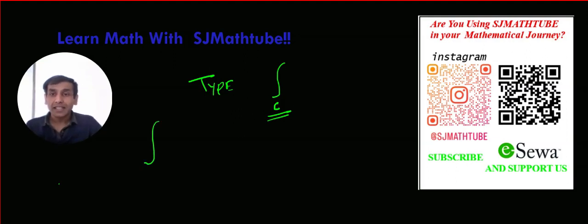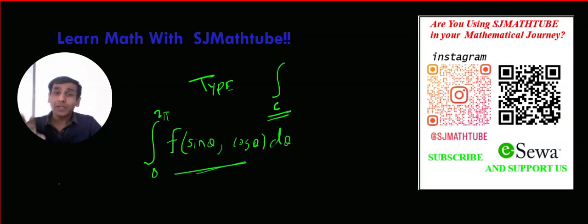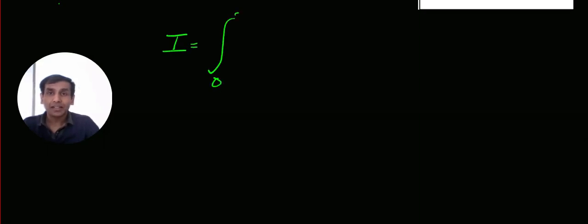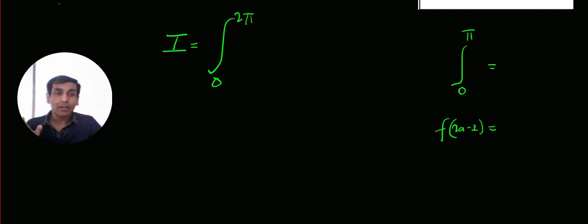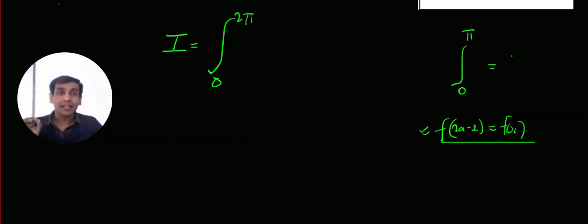The type we are going to learn here is integrals from 0 to 2π of a function of sin θ and cos θ. We will have two videos on this, but by this video you will get the concept. The limit should be 0 to 2π. Sometimes they will give you 0 to π — all you have to do is check whether f(2a − x) = f(x) condition is satisfied, so that you can write it as half of the integral from 0 to 2π.